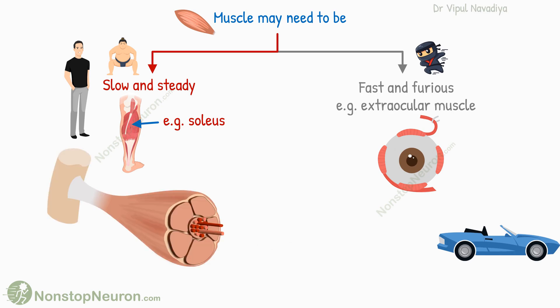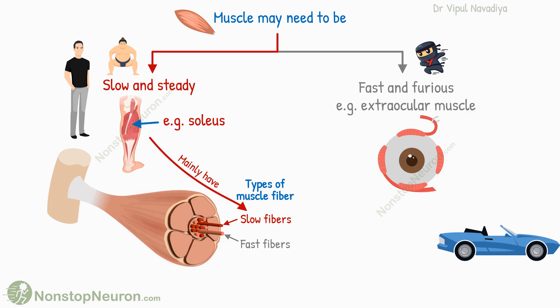To create this diversity, there are two types of muscle fibers: slow fibers and fast fibers. Muscles that do not need to be quick but need to maintain prolonged contraction are mainly made up of slow fibers, with a small number of fast fibers. Muscles which react rapidly are composed mainly of fast fibers and have only a small number of slow fibers.